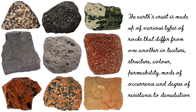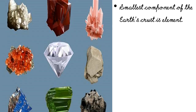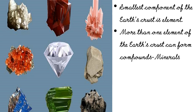The Earth's crust is made up of various types of rocks that differ from one another in texture, structure, color, permeability, mode of occurrence, and degree of resistance to denudation. The smallest component of the Earth's crust or lithosphere is called an element. More than one element of the Earth's crust can form compounds, which are known as minerals.